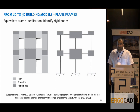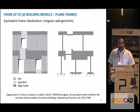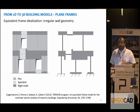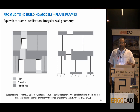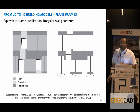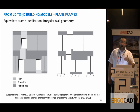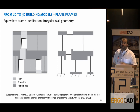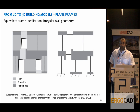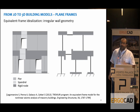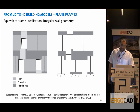If the openings are not regular, this operation is not trivial, but there are algorithms — for example implemented in Tremuri — that allow us to identify or at least approximate the location of spandrels, piers, and nodes. You can see that in this case the geometry of the node is quite complex, not just a simple rectangle, but this is in order to optimize the representation of the behavior of an actual structure.